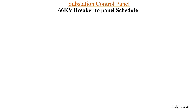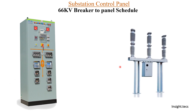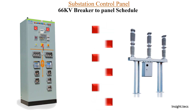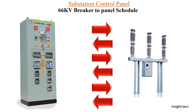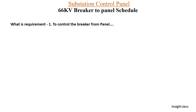So let's come back to today's video, which is about the 66 kV breaker-to-panel schedule. The schedule describes how wiring is prepared between the control panel and the circuit breaker. Generally, there are many control signals sent from the control panel to the circuit breaker, and vice versa — many signals are sent from the circuit breaker to the control panel. This is a two-way kind of communication.